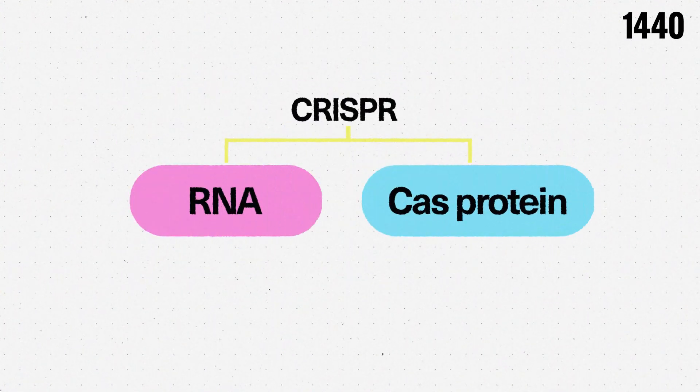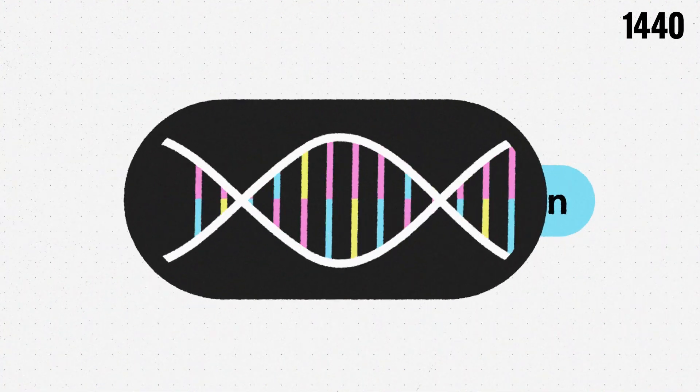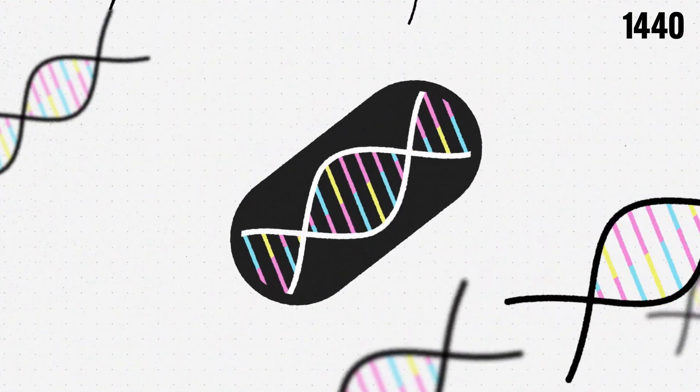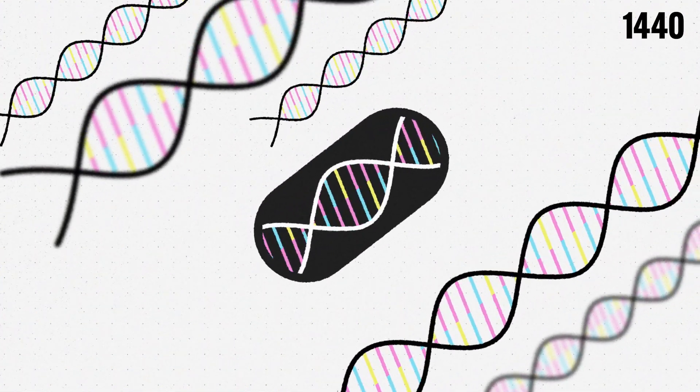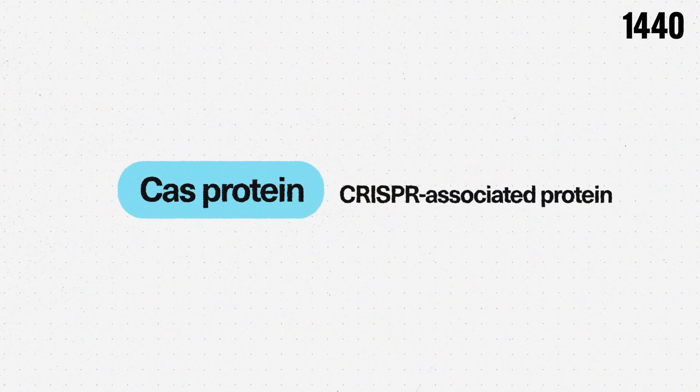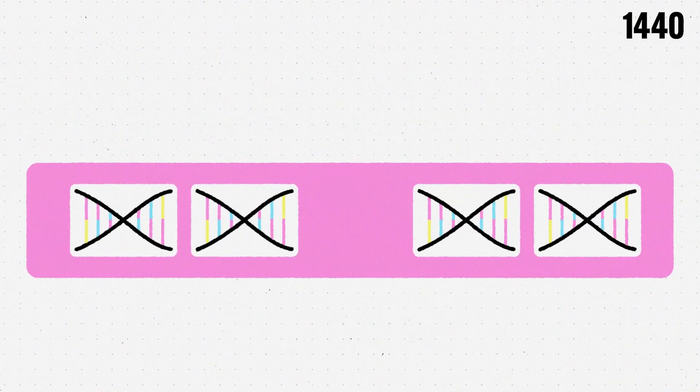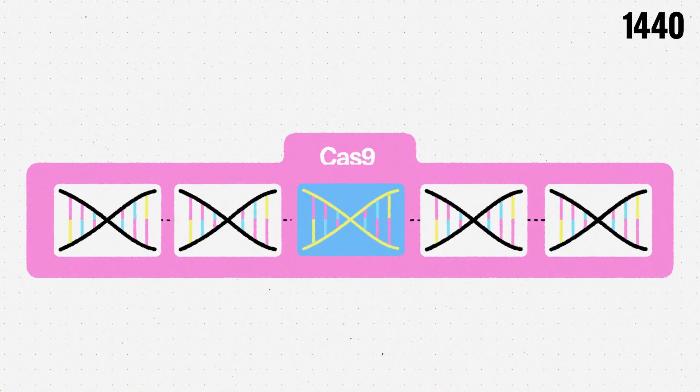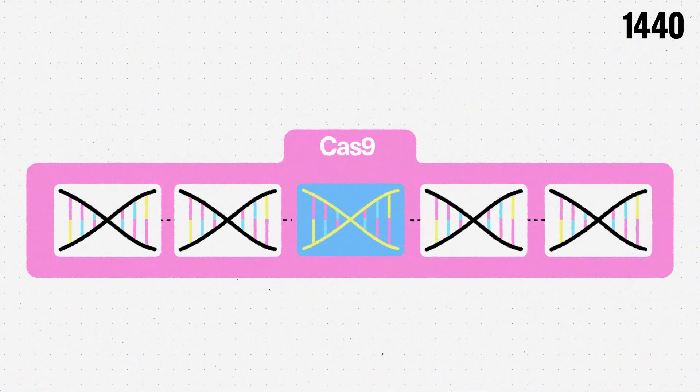CRISPR systems have two main parts. The first part is a guide RNA, which acts like a GPS directing the system to the right gene on the DNA strand. The second part is a Cas protein, or CRISPR-associated protein, which acts like scissors once the right gene is found. The most commonly used Cas protein is Cas9, which cuts the targeted DNA.